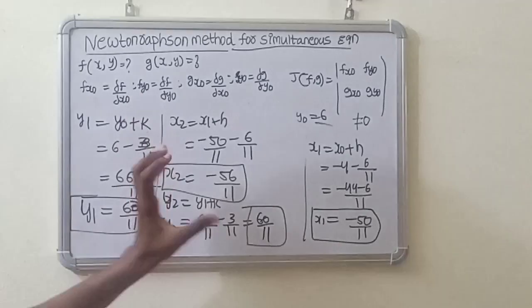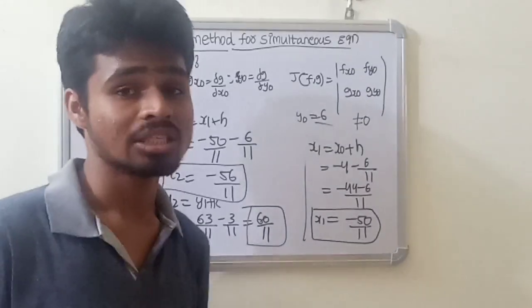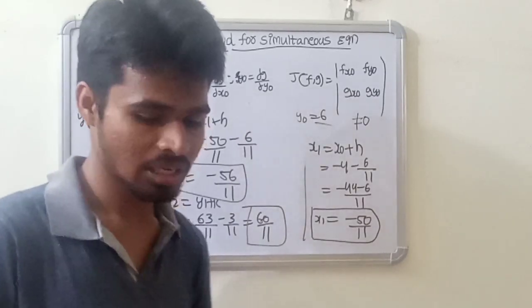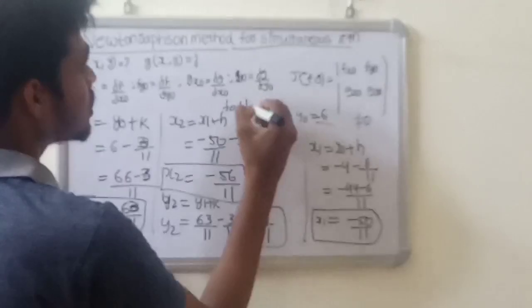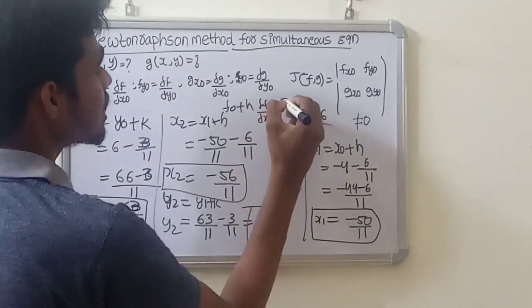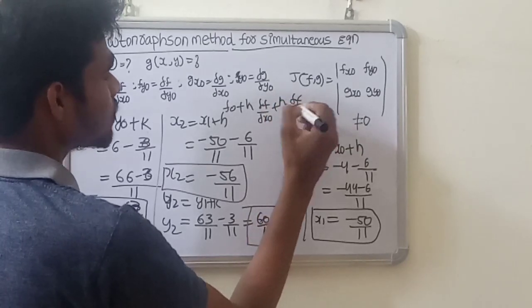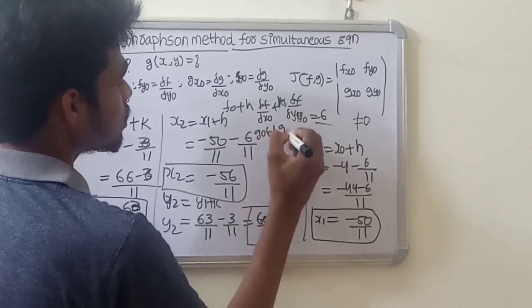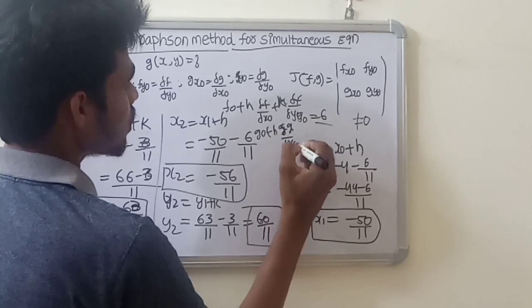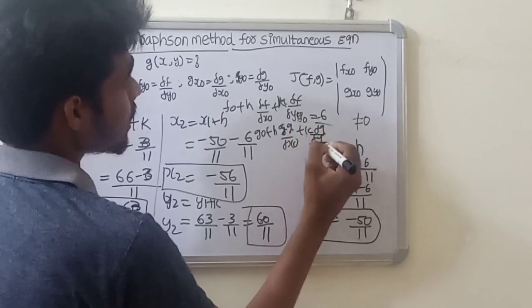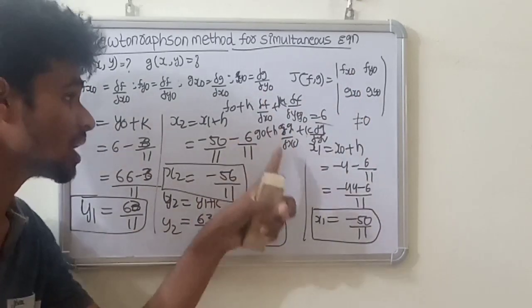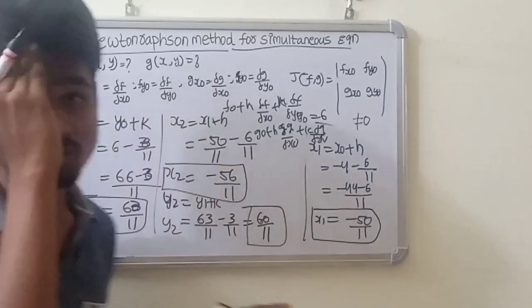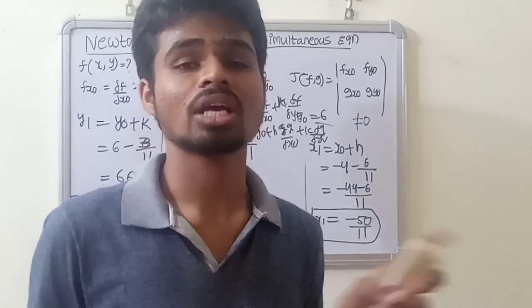First iteration of Newton-Raphson gives x1, x2, y1, y2. To find further values x3, use the same conditions: f0 plus rho f by rho x0 times h plus k times rho f by rho y0 equals zero, and g0 plus h times rho g by rho x0 plus k times rho g by rho y0 equals zero. Once these conditions are satisfied, find h and k values to get x2, y2, x3 values and so on.